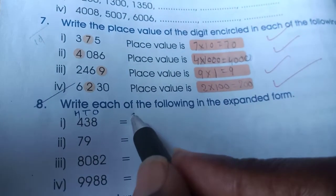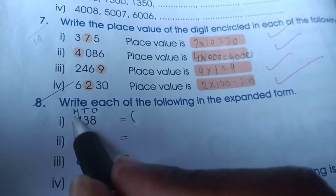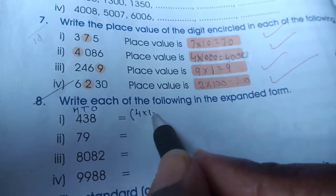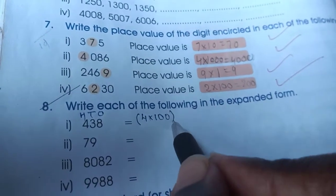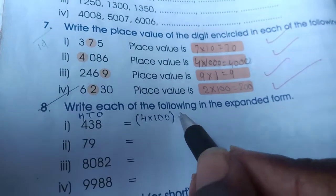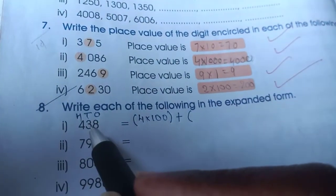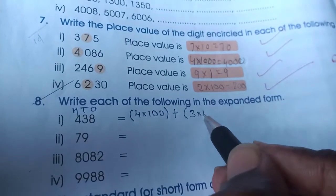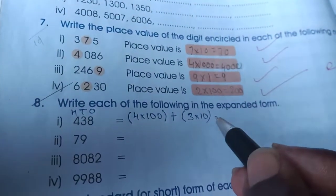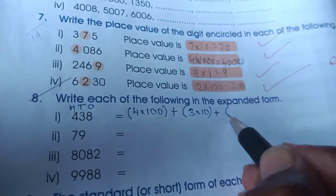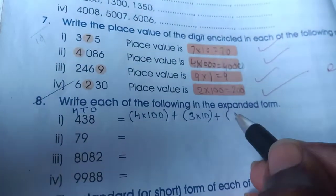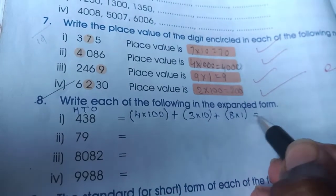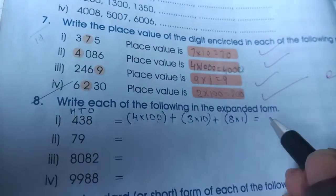Bracket open, 4 is in which place? Hundred place. This 4 into 100, bracket close, plus bracket open, 3 is in tens place, that is 3 into 10, bracket close, plus bracket open, 8 is in ones place, that is 8 into 1, bracket close. That is 4 into 100 is nothing but 400.